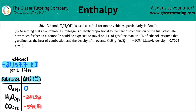Problem 80: ethanol, C2H5OH, is used as a fuel for motor vehicles particularly in Brazil. For part C, assuming the automobile's mileage is directly proportional to the heat of combustion, calculate how much farther an automobile could travel on one liter of gasoline than one liter of ethanol. Assume gasoline has the heat of combustion and density of n-octane, C8H18, with ΔHf = -208.4 kJ/mol and density 0.7025 g/mL.